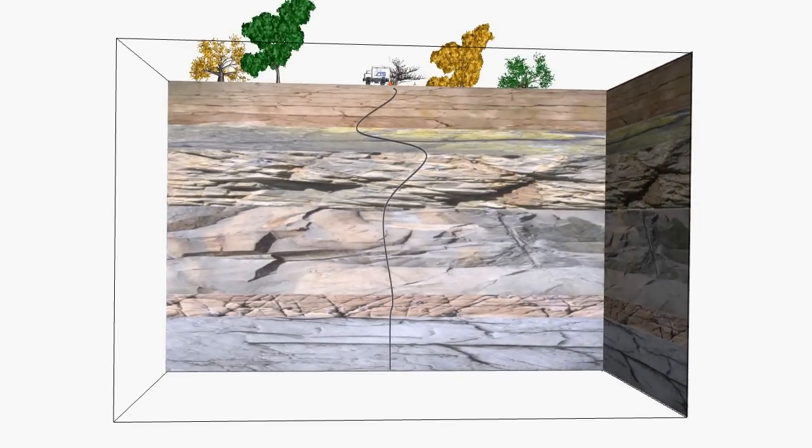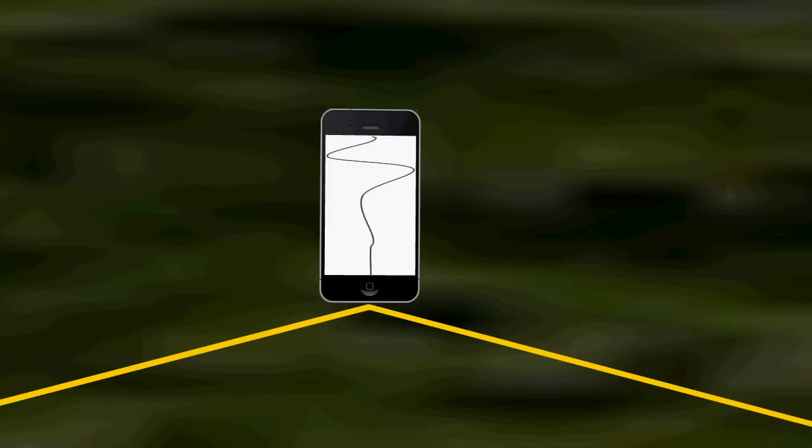The electric fields are picked up at the surface by the grounded dipole antenna and are transformed into a set of time-varying potential differences. These time-varying potential differences are transmitted through the signal cable to the GeoSuite application, which records the signals and stores them for later processing.